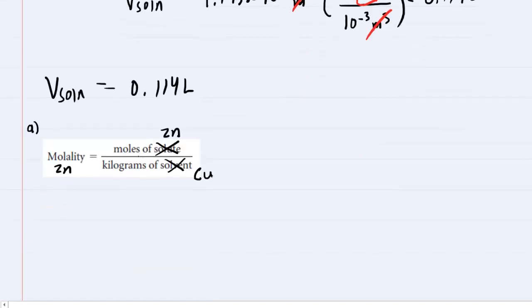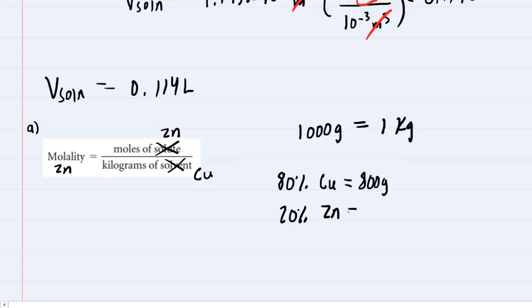To get the moles of zinc and kilograms of solvent, we go back to our assumption that we had 1,000 grams total, or one kilogram. 80% of that is copper and 20% is zinc. 80% of 1,000 grams is 800 grams, and 20% is 200 grams. 800 grams equals 0.8 kilograms.